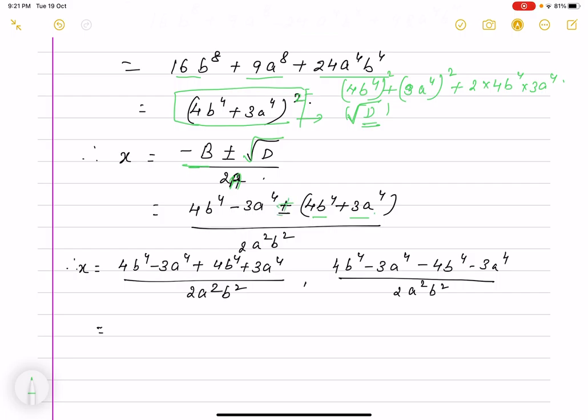Taking the plus sign: (4b⁴ - 3a⁴ + 4b⁴ + 3a⁴) / (2a²b²). The 3a⁴ terms cancel, giving 8b⁴ / (2a²b²), which simplifies to 4b² / a².